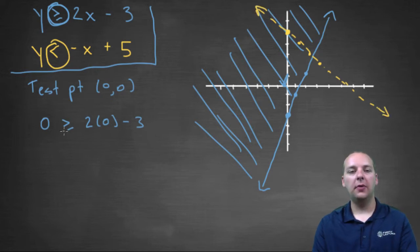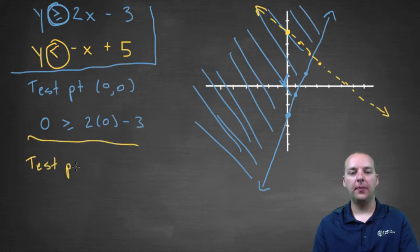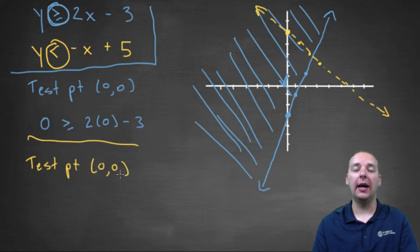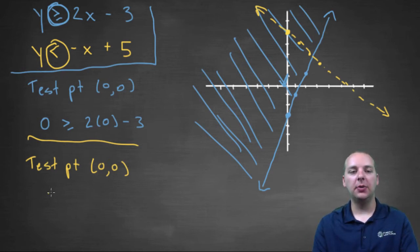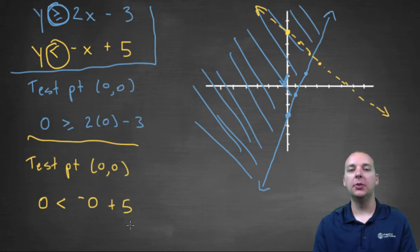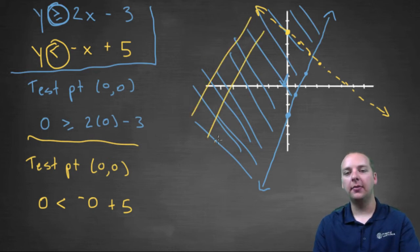Let's pick a test point — again I'll use zero, zero. The only requirement for your test point is that it cannot be on your line; it can be any other point. So plugging in zero, zero: is it true that zero is less than negative zero plus five? Yes, zero is less than five — that's true. So we're going to shade this side, the side that the test point is on.